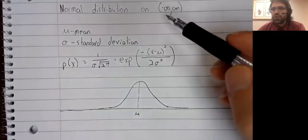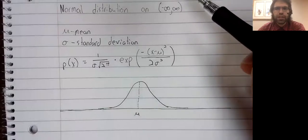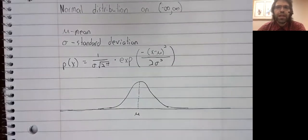Well, this is a probability distribution on the entire real number line. So theoretically, this number could be anywhere.